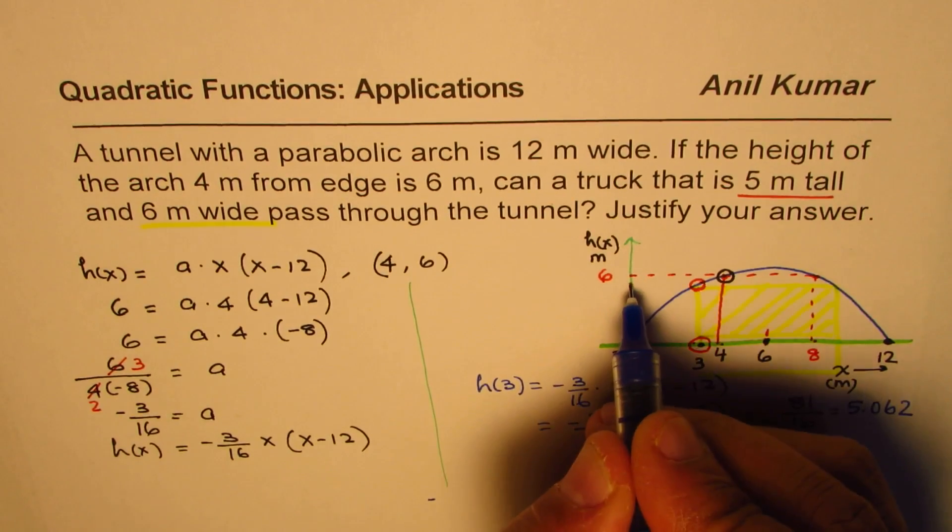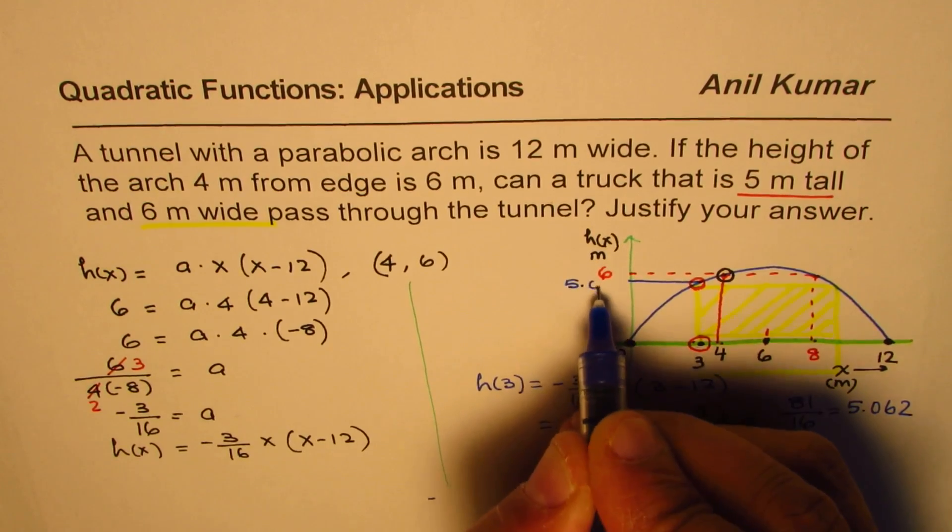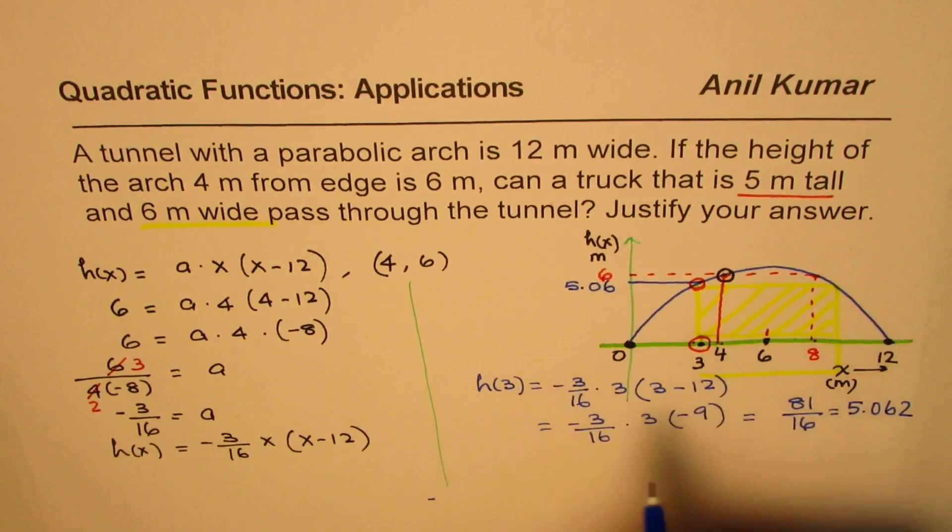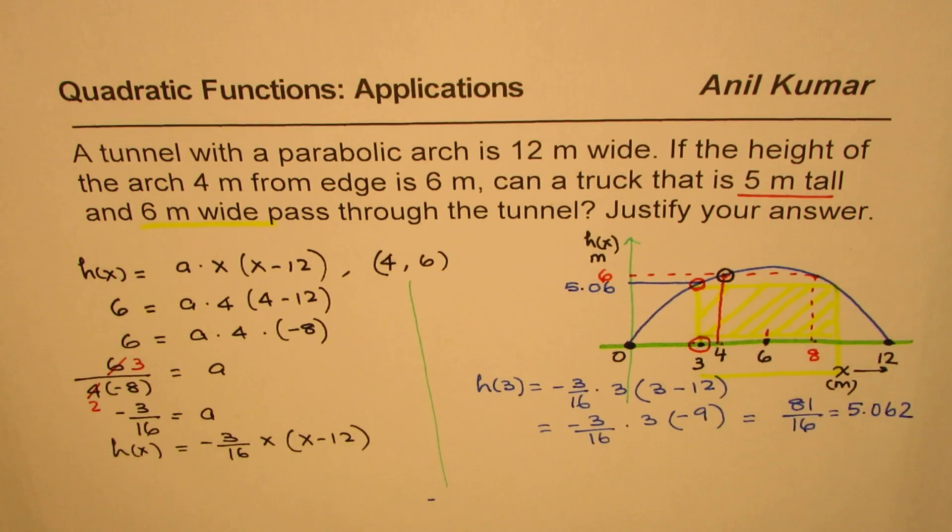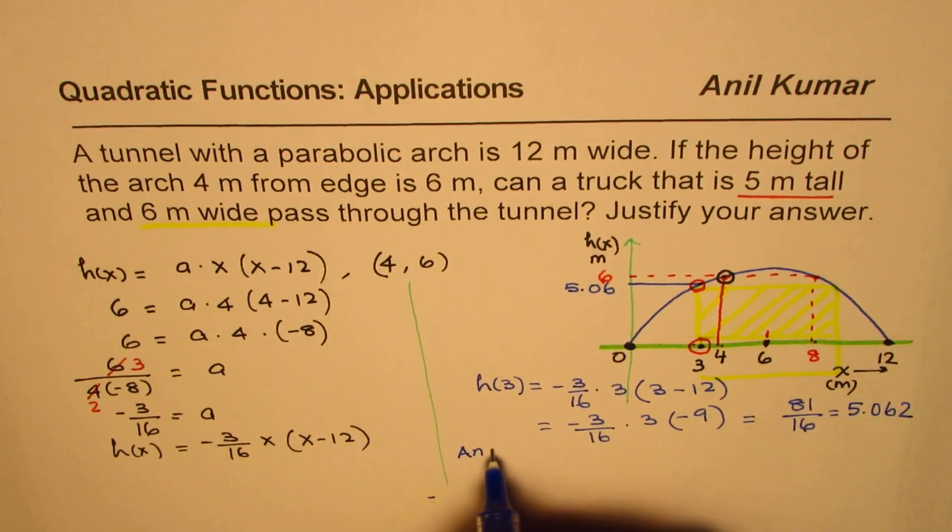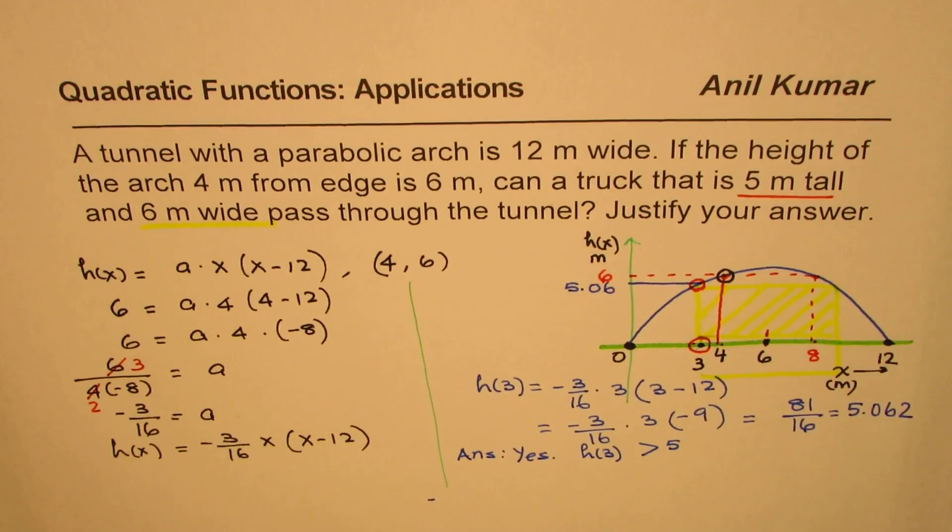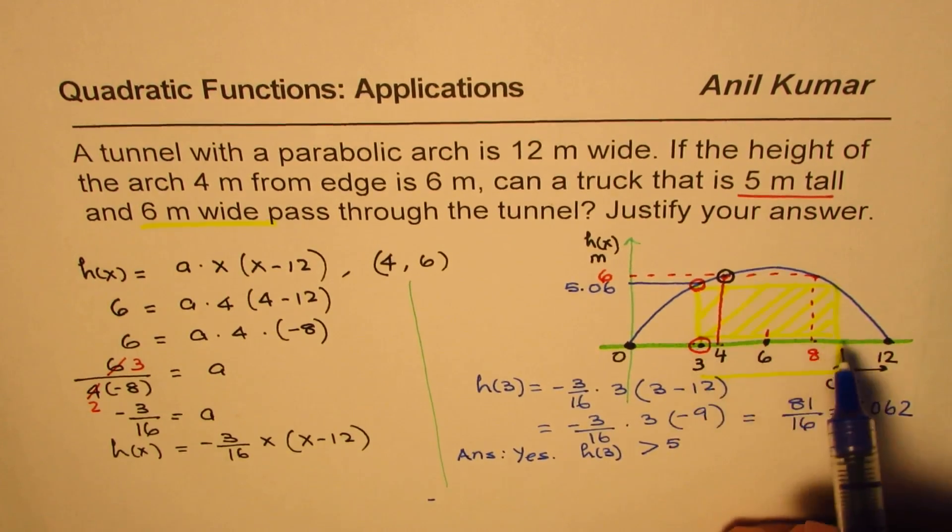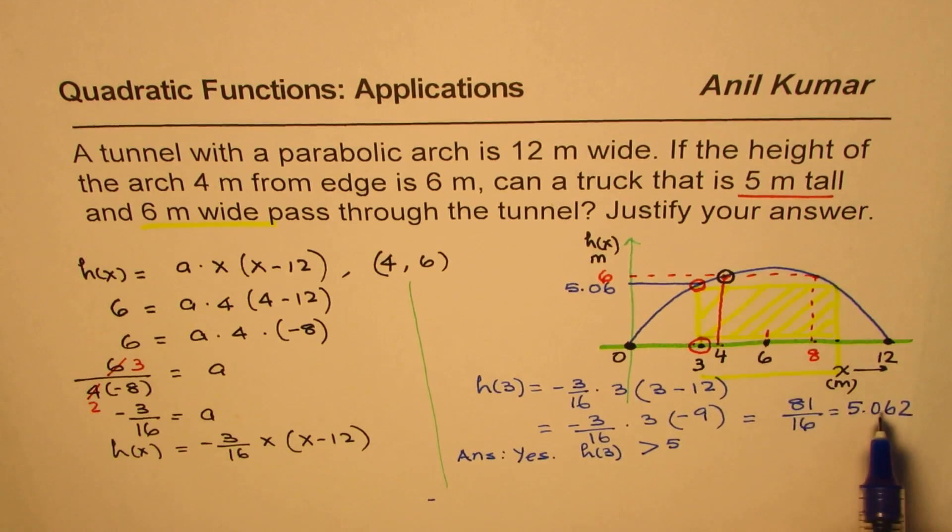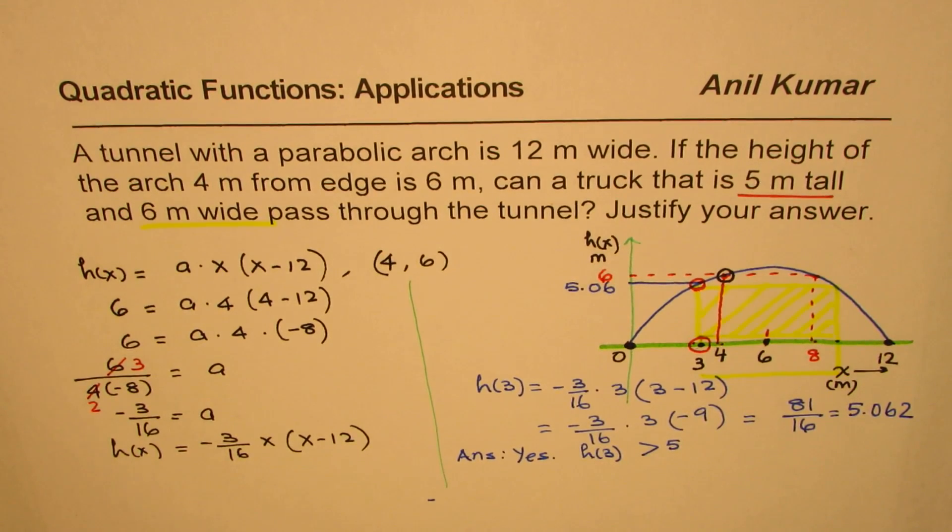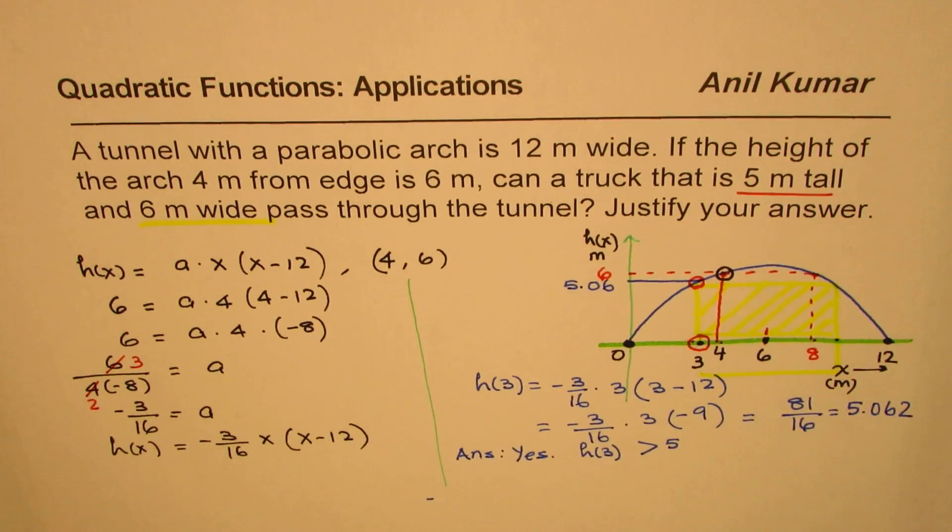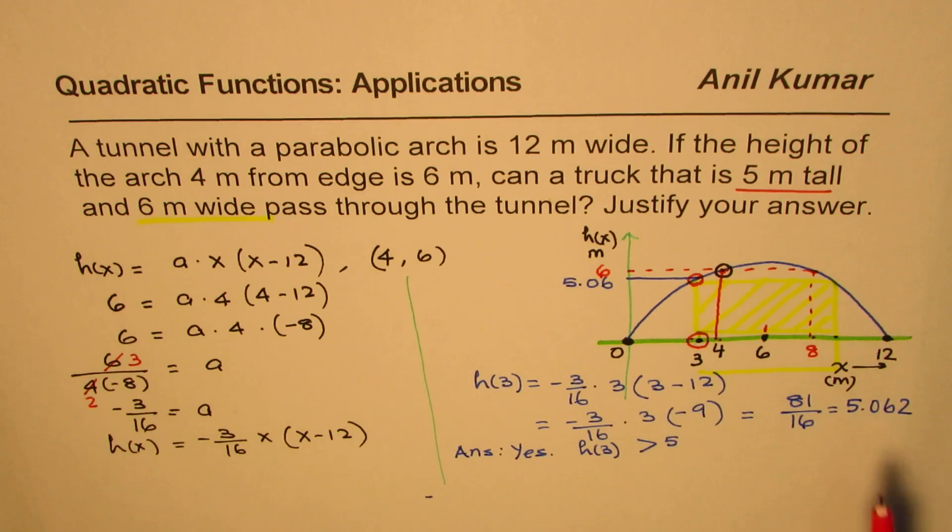So it can definitely go through. So the height here actually on the arc is 5.06. Since the height is more, the truck can go through. So the answer is yes. Since h(3) is greater than 5, therefore, the truck can go through. From symmetry here also at 9 will have the same value. So that is how you can solve such questions. It may be very close, but it is definitely greater than 5. So that is the gist of it.